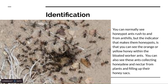Identification: you can normally see honeypot ants rushing to and from anthills, but the indicator that makes them honeypots is that you can see the large orange or yellow honey within the bloated worker ants. You can also see the ants collecting honeydew and nectar from plants and filling up their honey abdomen sacks.